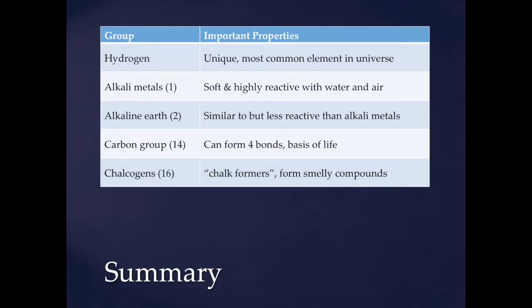Group 16 are known as the chalcogens — the name literally means chalk formers. This is oxygen, sulfur, selenium, tellurium; they all form smelly compounds. For example, if you've ever been around water that has sulfur in it, it smells like rotten eggs. That rotten egg smell is a sulfur compound. You smell it sometimes with matches or other things — you can smell that smelliness.